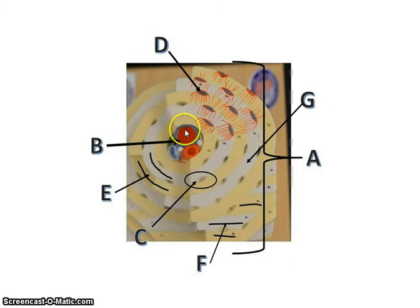In the center of each osteon, because bone is living tissue and it needs a blood supply and it needs a nerve supply, it gets it through the structure here called the central canal.